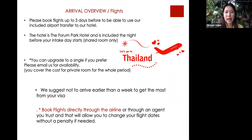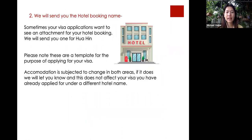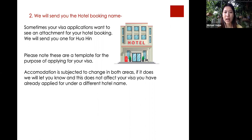When you book the flight, we recommend you book directly with the airline or through an agent you trust, so that if you need to change the flight you can negotiate to avoid change fees. We will send you a hotel booking for accommodation in Hua Hin — this is for the visa application only as a reference. The place you actually stay may not be the same as the document we send you, but this is just for the application.